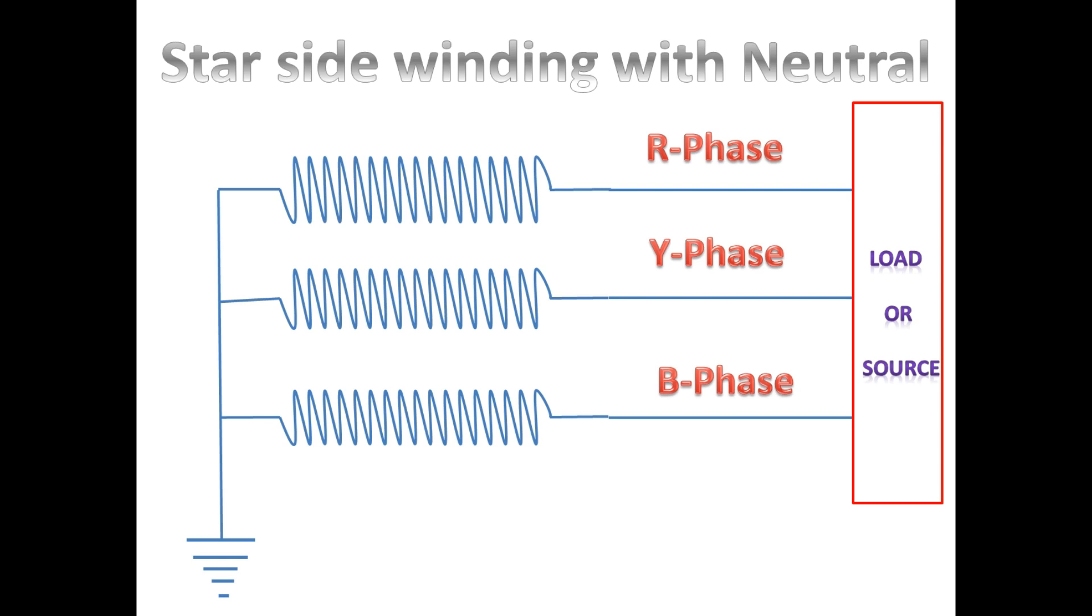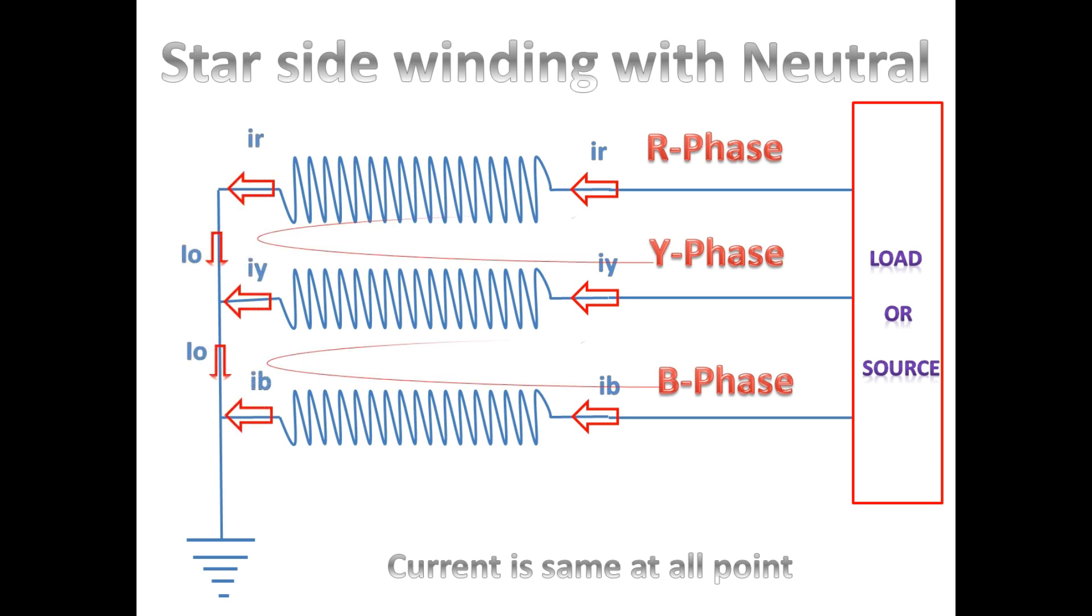If we see the current, it will be same from the phase side to neutral side. Wherever we check or measure the current, it will be the same. On the same winding, if we check the voltage, the voltage will be reduced from the phase side to neutral side.